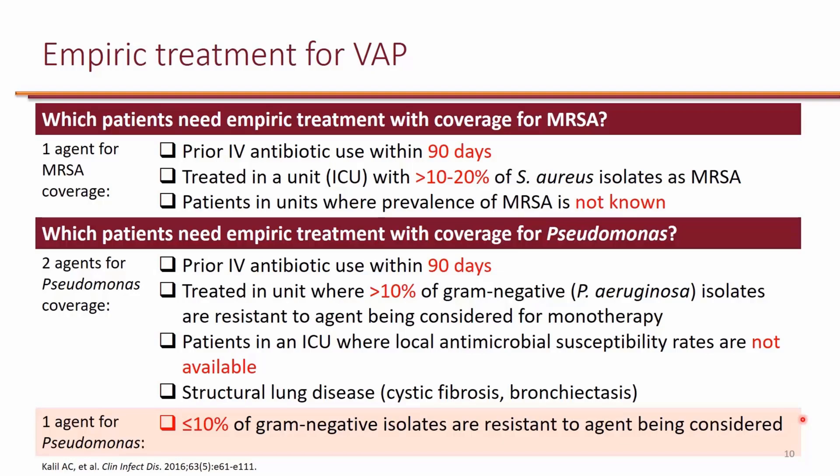The same 90-day IV antibiotic history applies to Pseudomonas coverage. With Pseudomonas, it's recommended to use two agents active against it empirically — especially in ICUs where the susceptibility rate to the agents being used is less than 90% (i.e., the resistance rate is more than 10%), or if susceptibility data from the antibiogram is not available, or if the patient has a structural lung disease such as cystic fibrosis. These patients need two anti-pseudomonal agents until susceptibility results return.